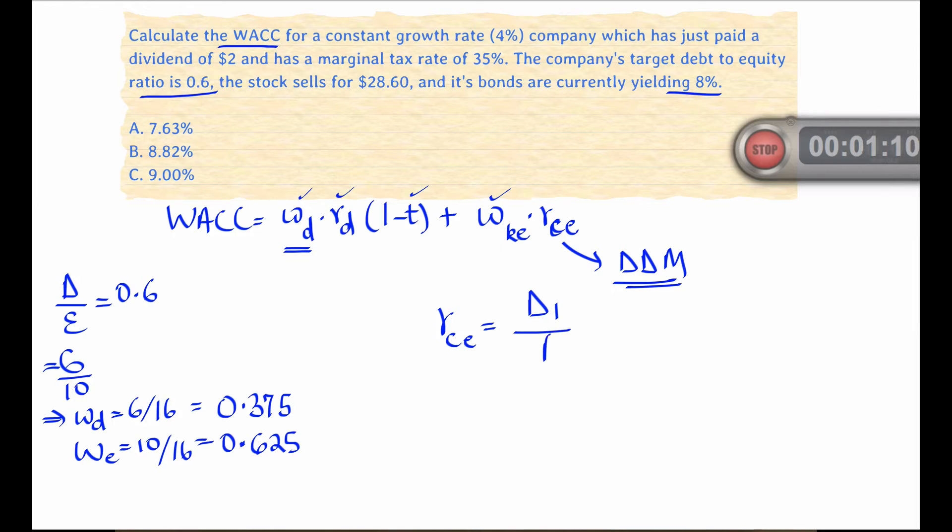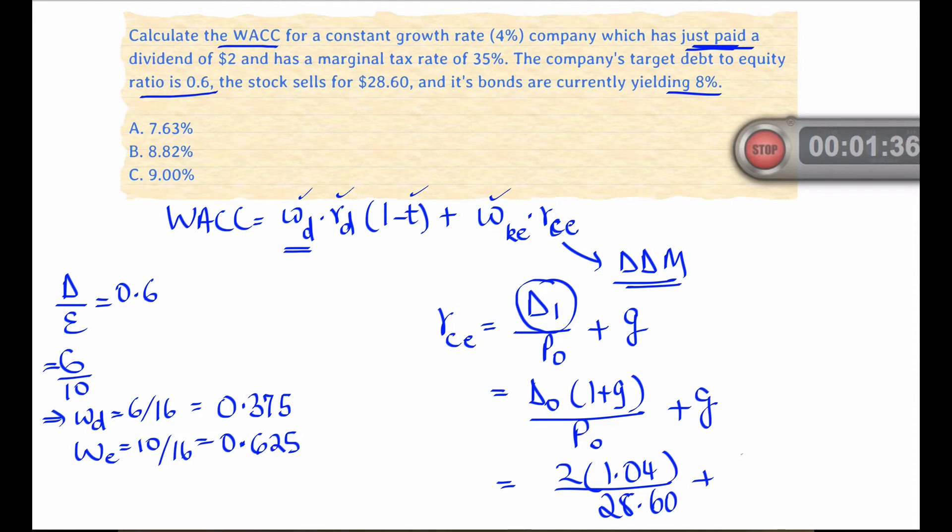Now here's a second fumble point in this question because what we're given is the dividend just paid and we have to adjust it to the dividend for next period, and of course we do that by multiplying it by 1 plus g.